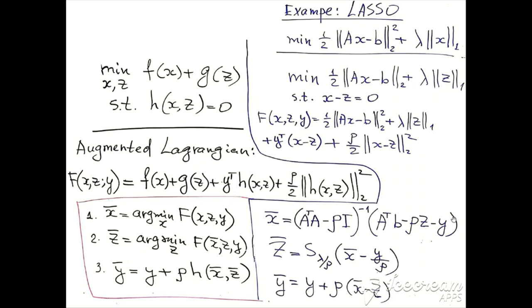In order to minimize in Z while X is constant, pay attention that the function in Z is separable. For example, the L1 norm of Z is just the sum of absolute values of Z. The linear term of Z is also a sum of elements Z_i multiplied by y_i. Each component depends only on Z_i. The same can be said about the L2 norm term.